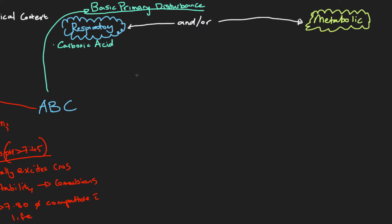Even though we usually think of the kidneys as the major organ for acid clearance and maintenance of pH, that really isn't the case. The lungs and the respiratory system are the major organ of acid excretion and the major organ of moment-to-moment regulation of pH. The goal of the respiratory system with respect to pH maintenance is to clear carbonic acid.